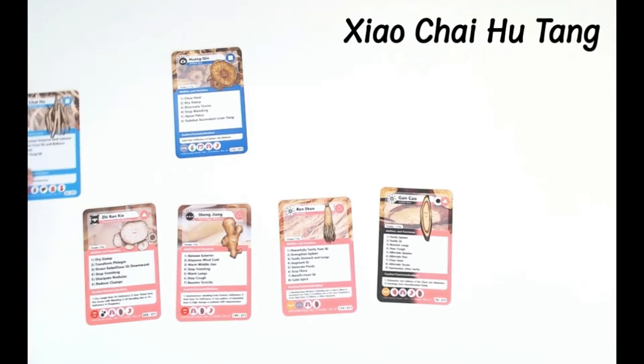If you remove Chai Hu and also Huang Chin too, instead of Shen Chang, if you add Gan Chang, this is Huang Nian Tang.